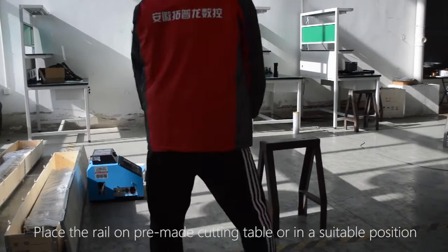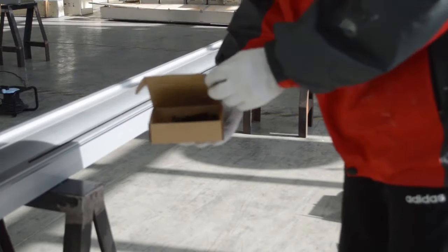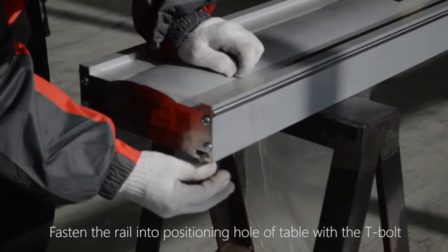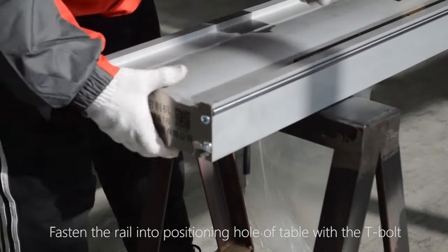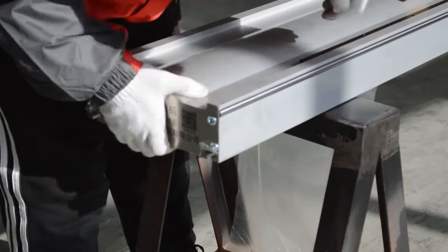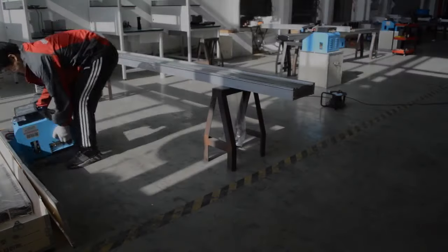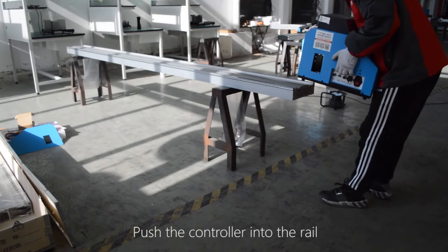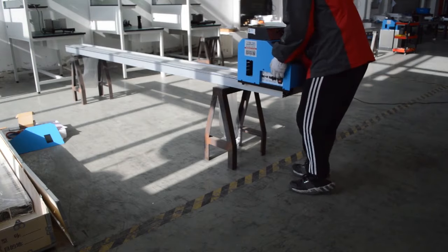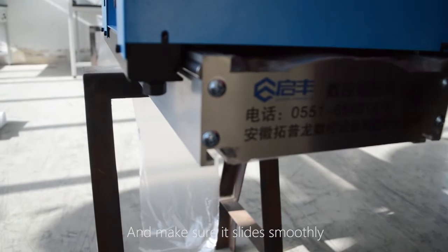Place the rail on pre-made cutting table or in a suitable position. Fasten the rail into positioning hole of table with the T-bolt. Push the controller into the rail. Snap the bearing under controller on two axes and make sure it slides smoothly.